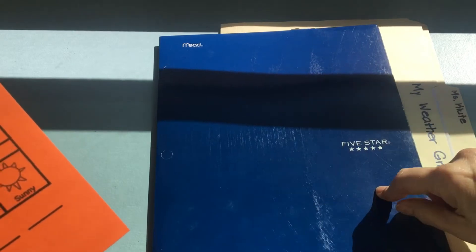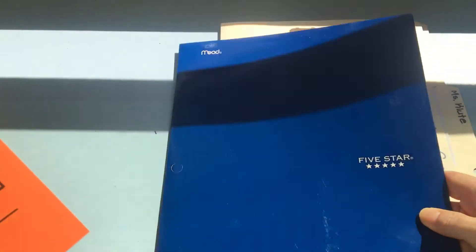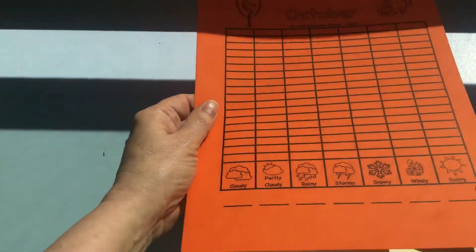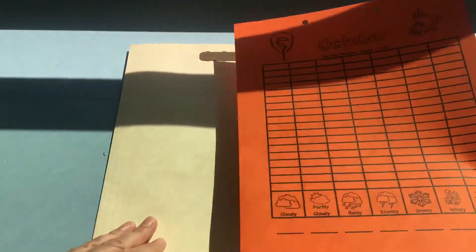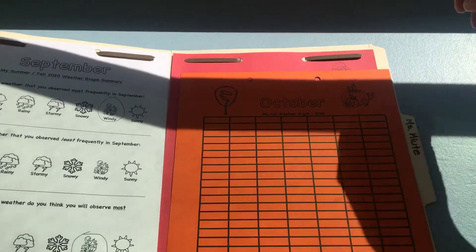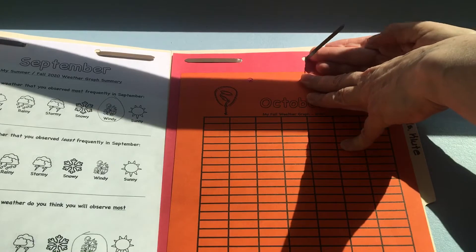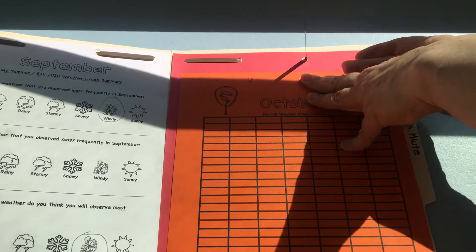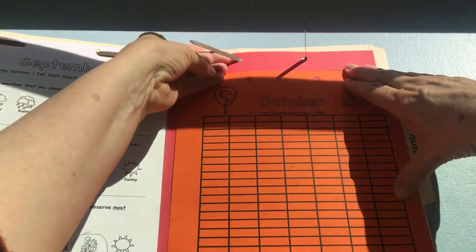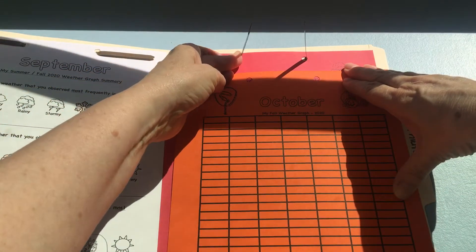You might need help with this. You might need to ask an adult to help you because in the class last year some of the children had a hard time with this. You'll see I'm very carefully pushing up the prongs right here, giving them a little push. These are called prongs or fasteners.